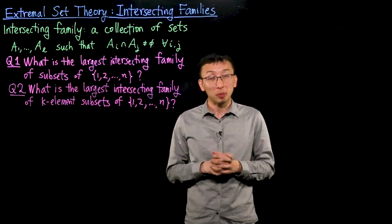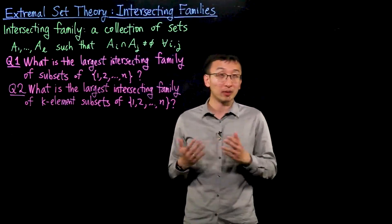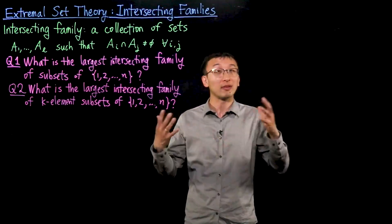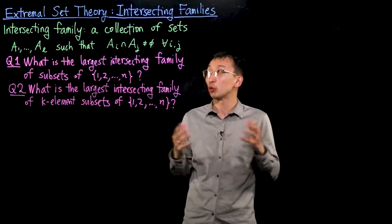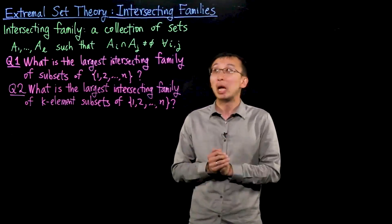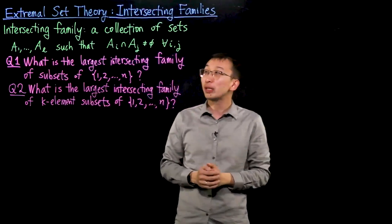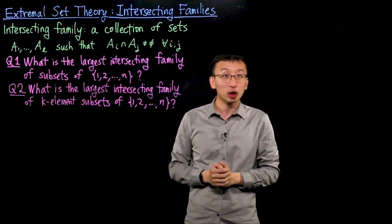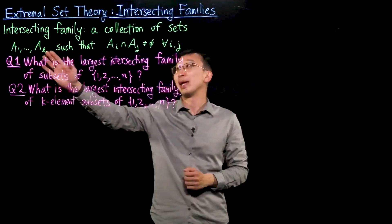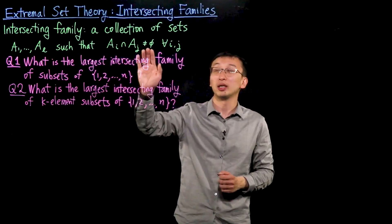Let us look at an application of the probabilistic method to extremal set theory. Extremal set theory concerns the study of families of sets that have certain desirable properties, asking questions such as what is the largest set family you can have with such properties. In this video we will focus on the property of being an intersecting family: a collection of sets A1 through AL such that these sets pairwise intersect in a non-empty intersection.